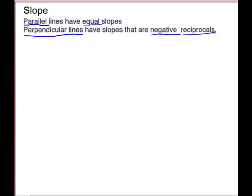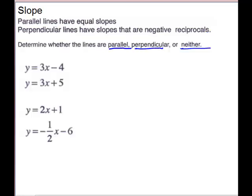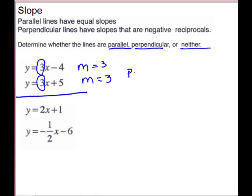Next we'll use slope to tell whether lines are parallel, perpendicular, or neither. For parallel lines, they will have the same slope. Perpendicular lines will have slopes that are negative reciprocals — opposite sign and flipped over. If it is neither of those cases, it will not be parallel or perpendicular. For our first example, they're in slope-intercept form, so it's easy to pick off the slope. The slope on the first line is 3, and the slope on the second line is 3. The slopes are the same, so the lines are parallel.